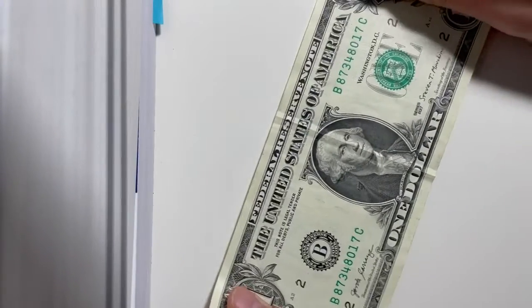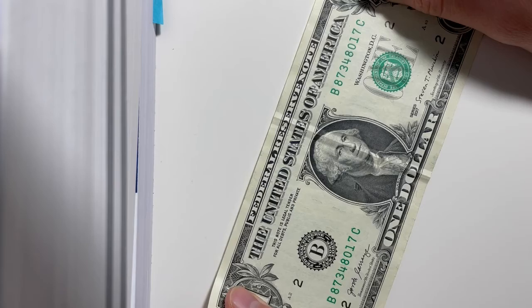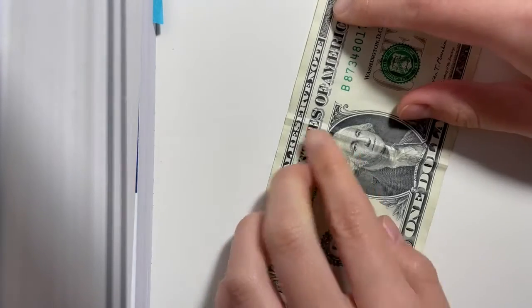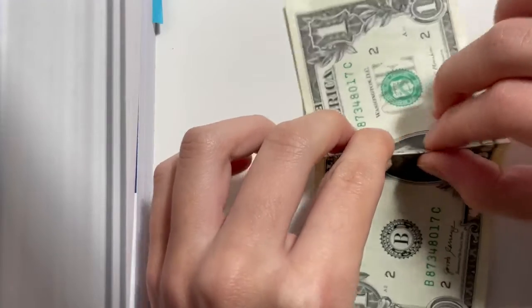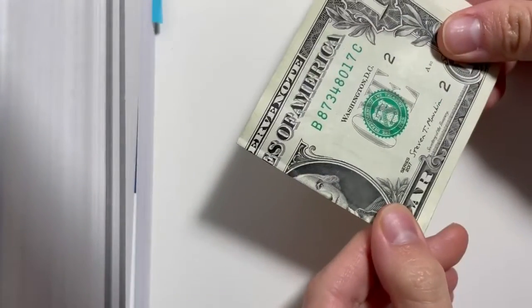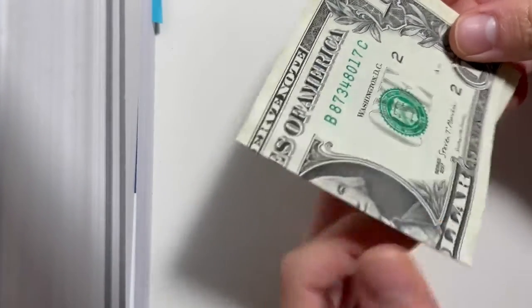So for the first one, you are going to need any kind of bill, so I just have a dollar bill here, and what we're going to do is fold it down the middle of the nose, like this, and then we're going to fold it through each eye the opposite way.